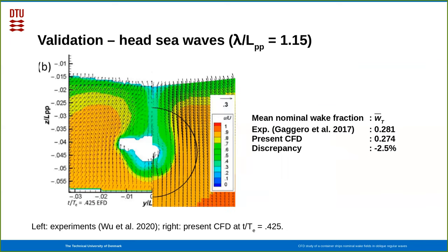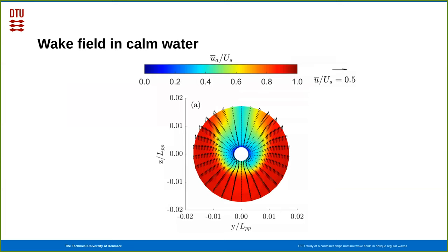We can also do validation in head waves, where there's experiments conducted also by Wu, and you can see here an instantaneous picture comparing the experiments on the left with the simulations on the right. You can time average over one encounter period, and then compare with the results from Gagero et al. from the same group, and they get a wake fraction measured, a mean one at 0.281, and we get 0.274, so a discrepancy of the time averaged wake fraction of less than 3%.